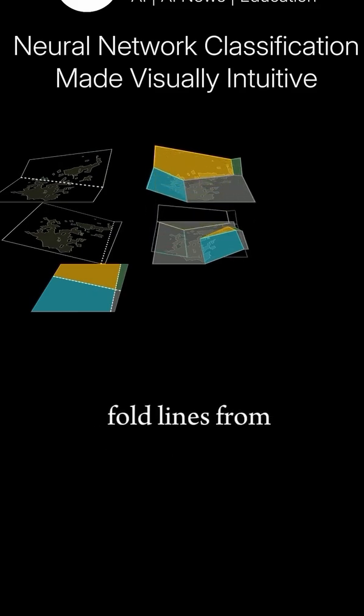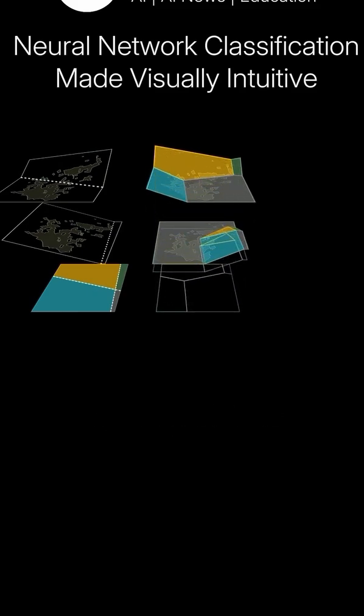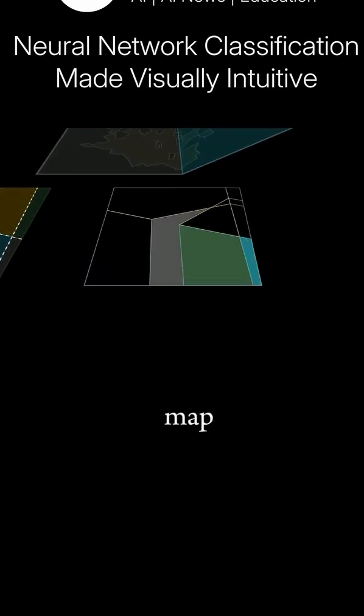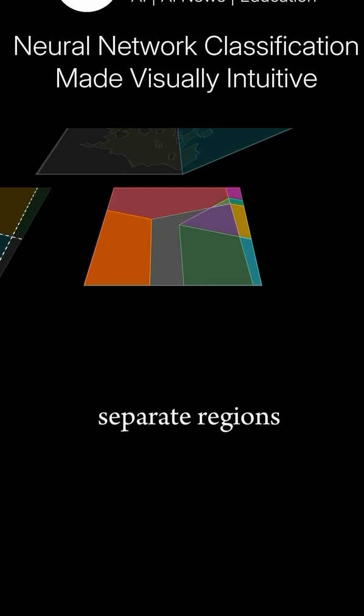Stacking the new fold lines from our second layer, these new folds at various angles come together in a significantly more complex tiling of our map with these ten separate regions.